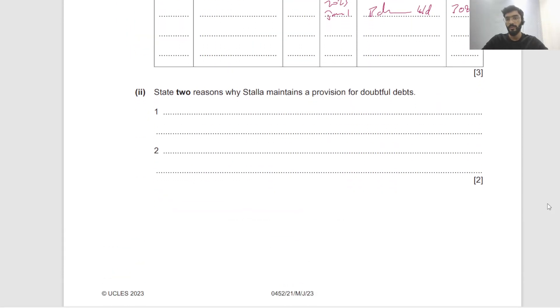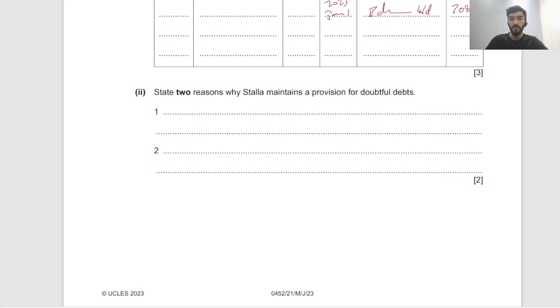State two reasons why Sala maintains a provision for doubtful debts. One is to apply the matching principle. One is to apply the prudence principle, making sure the receivables are not overstated. So that's the reason we maintain these accounts.